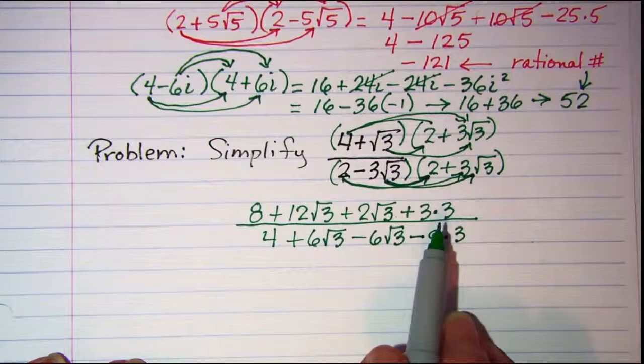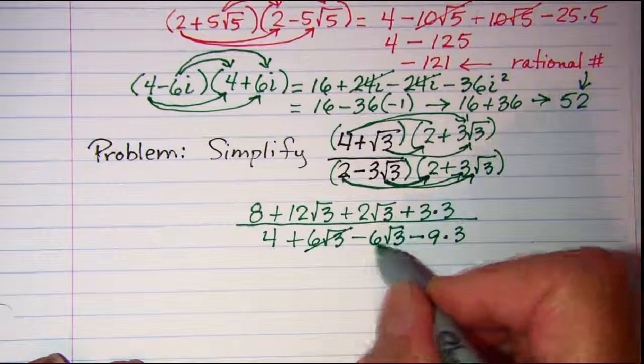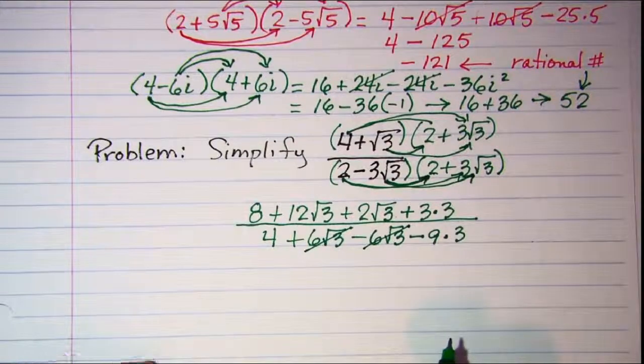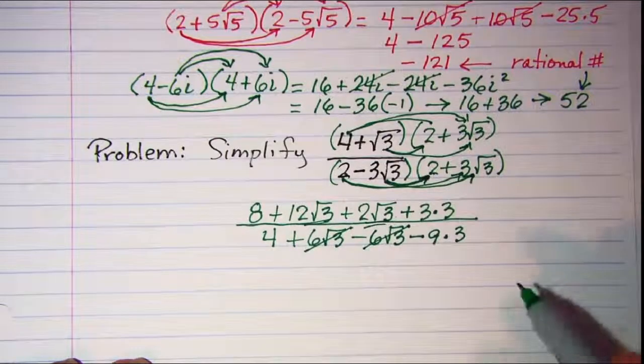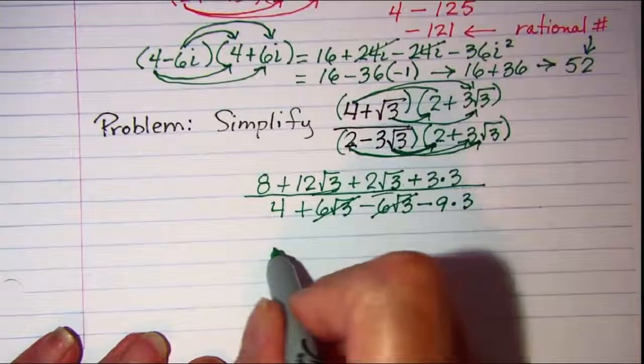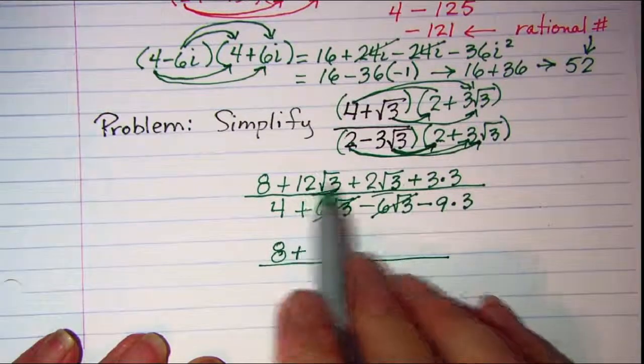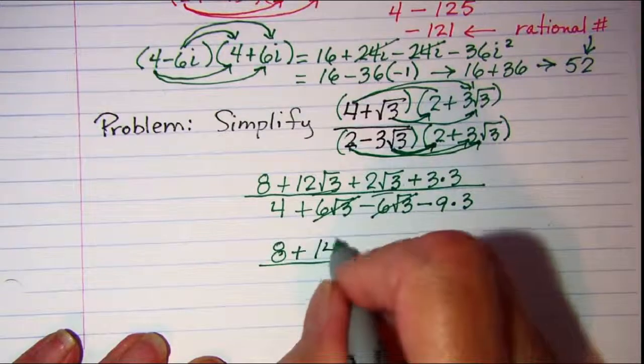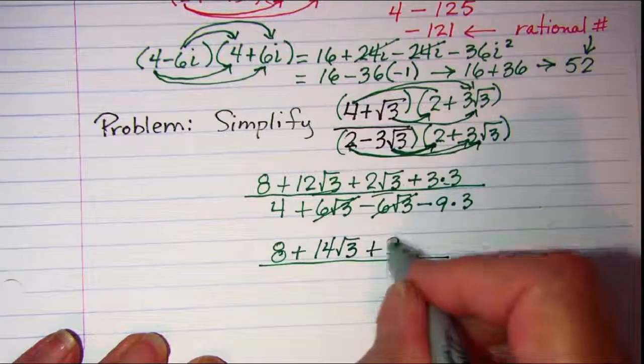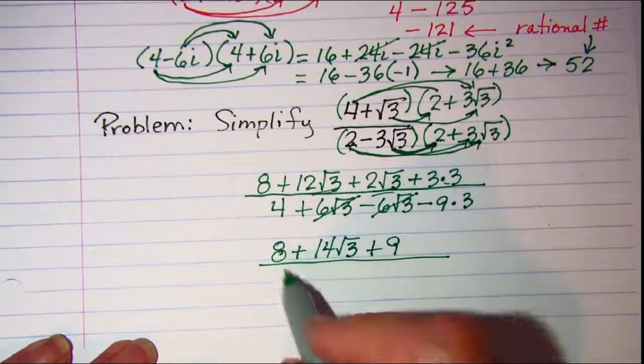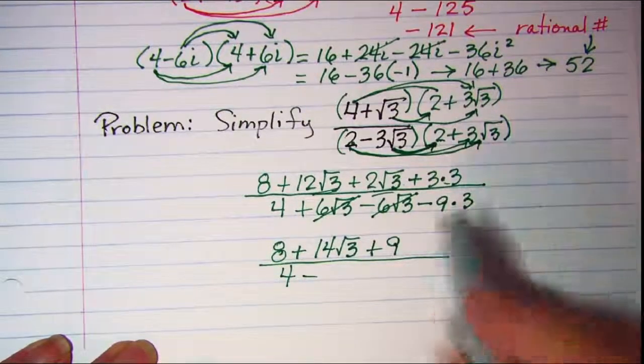Alright, let's do some simplifying. First of all we know that this positive 6 root 3 and this negative 6 root 3 are going to cancel. We can also combine the radical terms. So we have 8 plus 12 root 3 plus 2 root 3 is 14 root 3 and then plus 9 back here in the back. In the bottom I have 4 minus 9 times 3 is 27.